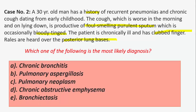The most likely diagnosis is bronchiectasis, which is dilatation and destruction of larger bronchi caused by chronic infections and inflammation. Common causes include cystic fibrosis, immune defects, and infection, though some cases are idiopathic. Symptoms include chronic cough, purulent sputum expectoration, and some patients may also have fever and dyspnea.